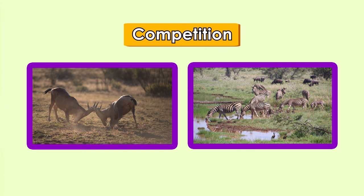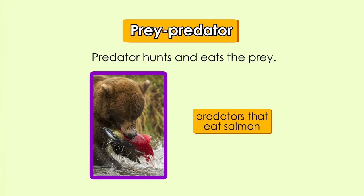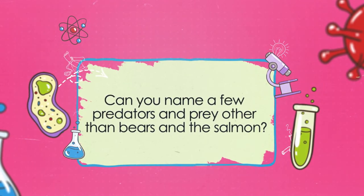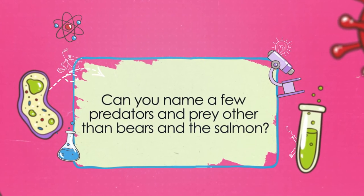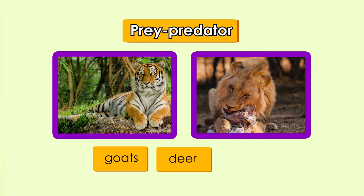More intense competition happens when the number of organisms is higher than the supply of necessities, or when the limited necessities become fewer. In the prey-predator relationship, the predator hunts and eats the prey. For example, bears are predators that eat salmon, so the salmon is the prey. Lions and tigers are also predators that eat goats, deer, and zebras, making those animals prey.